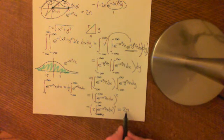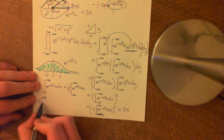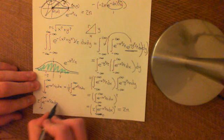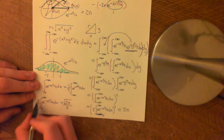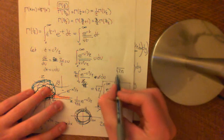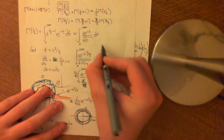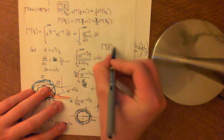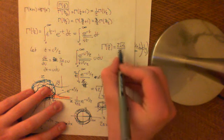So we have that 2 times the integral from 0 to infinity of e to the negative x squared over 2 dx, all squared, equals 2 pi. Taking the square root of both sides, 2 times the integral from 0 to infinity of e to the negative x squared over 2 dx equals the square root of 2 pi. Dividing both sides by 2, the integral equals the square root of 2 pi over 2. Now we substitute back into our original formula for gamma of a half.